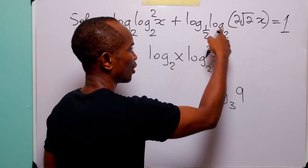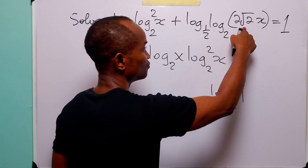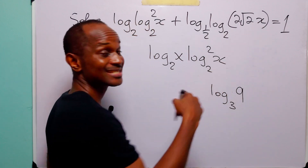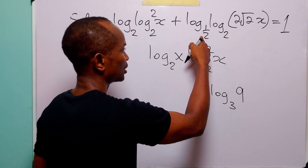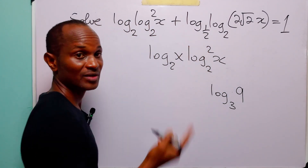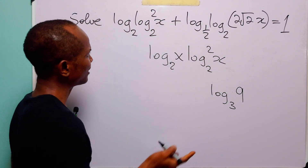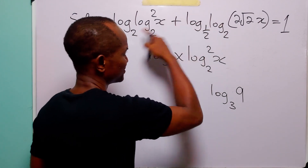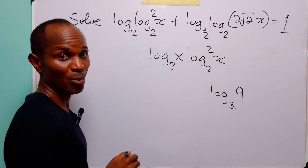This is exactly the same as where log to base 2 of 2 root 2 times x is the object on which log to base half is acting. And the sum of these two terms is equal to 1.